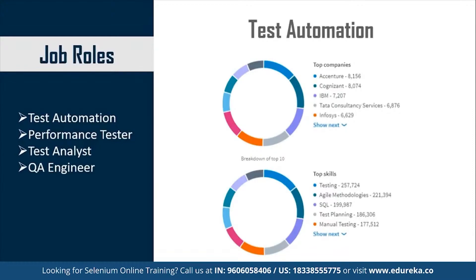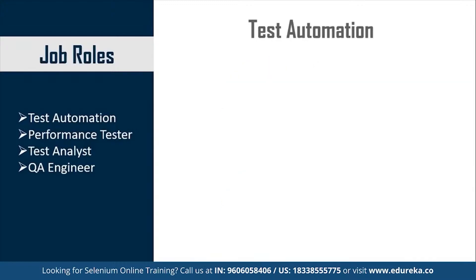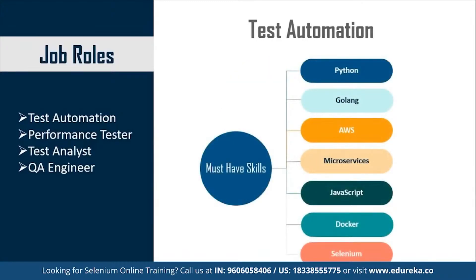The top skills required to become a test automation engineer include knowledge of testing, agile methodologies, SQL, test planning, and manual testing. Apart from these, you need to be well acquainted with programming languages like Python, Golang, and JavaScript. You also need to be well versed with AWS, Microservices, Docker, and Selenium. These skills will help you move to a higher position as a test automation engineer and also aid your appraisal.